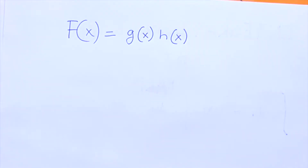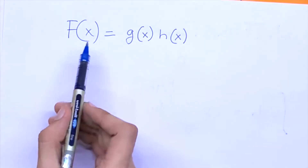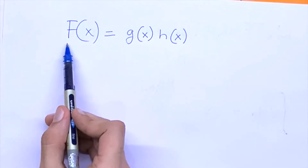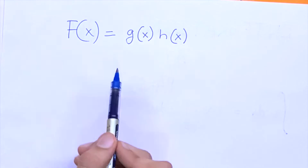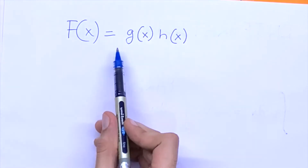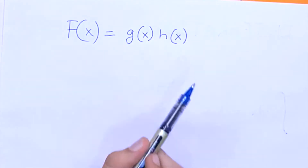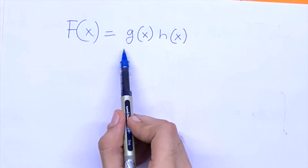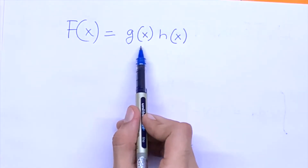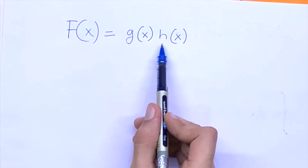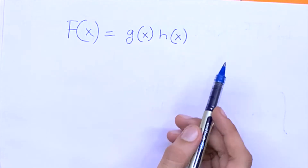Okay guys, so let's start with the proof. Let's say we have a function f of x, and we can write it as a product of two other functions g of x times h of x.